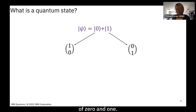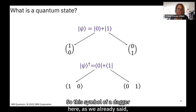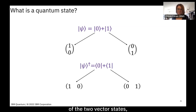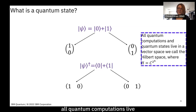The dagger symbol, as we said, is the Hermitian conjugate — it takes your ket into a bra and your column vector into a row vector, flipping the dimensionality. So the zero state becomes (1, 0) as a row vector and the one state becomes (0, 1).